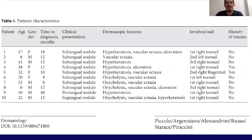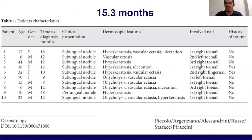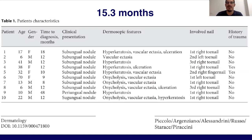These are the patient features. As you can see, there is variability in age — we have children, 60-year-olds, and elderly patients. The most important feature emerging from this table is the late diagnosis: we have about 15 months of delay between the appearance of the lesion and the diagnosis. The subungual mass is the most common clinical presentation; sometimes we can also have a periungual nodule.